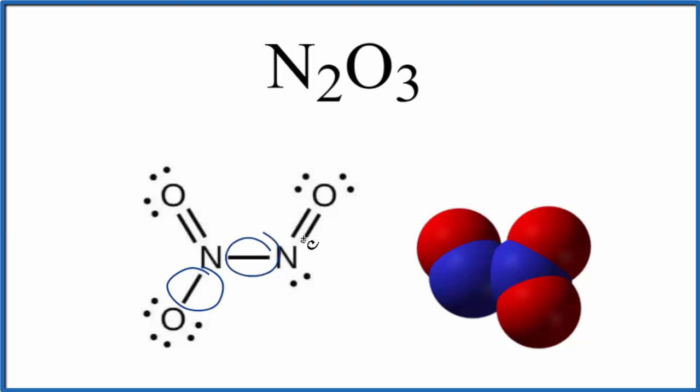Again, between the nitrogens here. And then we have two lines - these are double bonds. Two pairs of electrons are shared between the nitrogen and the oxygen here. Do note that we would have resonance with this structure as well. But this is a good Lewis structure for N2O3, and you can see the covalent bonds.